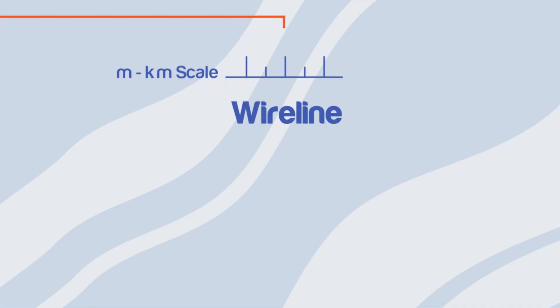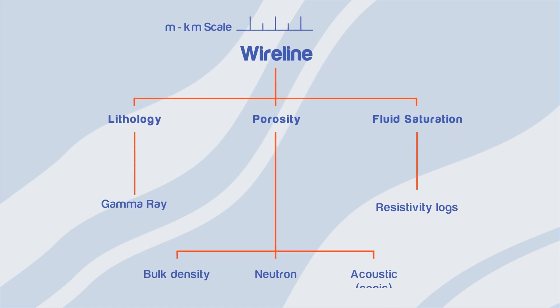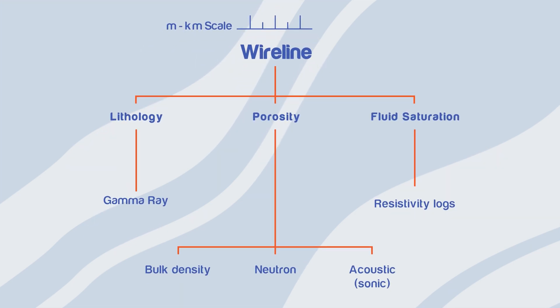Different wireline logging tools are used to acquire three main properties: lithology, porosity, and fluid saturation.